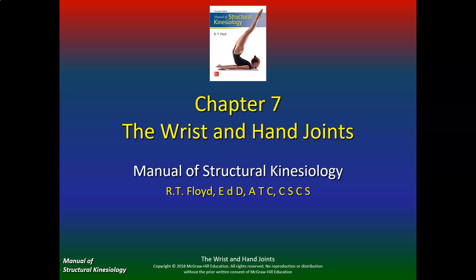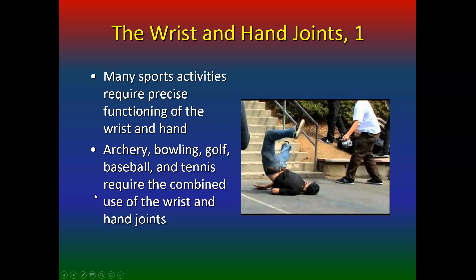As we finish the upper quarter or upper extremity, we end with the wrist and the hand. I always like to see these skateboarders because they always end up fracturing their wrist or hand. This is very common — many sport activities require precise functioning of the wrist and hand: archery, bowling, golf, baseball, and tennis require the combined use of wrist and hand joints.